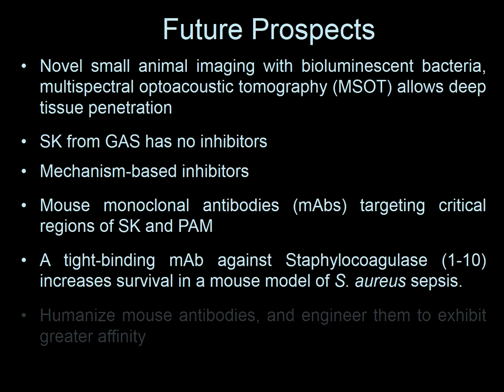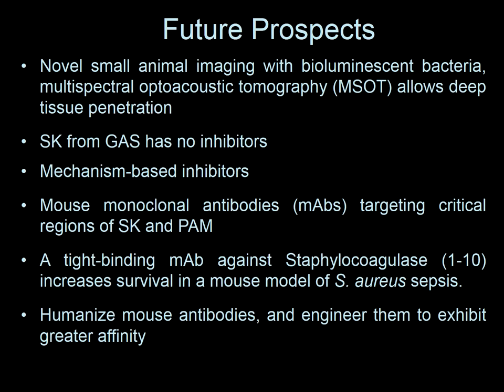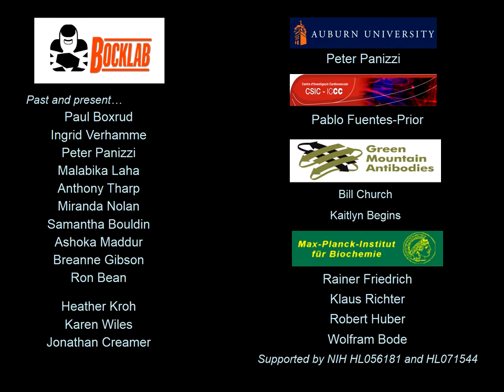This is an antibody that grabs the aminoterminus of staphylocoagulase and prevents molecular sexuality. The antibodies we want to make can be engineered to be humanized — all human sequence — and engineered to exhibit greater affinity than before. That's our plan. I thank the past and present members of my lab, Peter at Auburn, Bill Church at Green Mountain Antibodies, the Max Planck Institute collaborators, and NIH funding. Thank you for your attention.